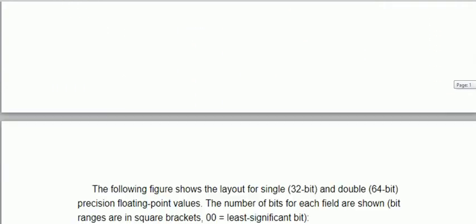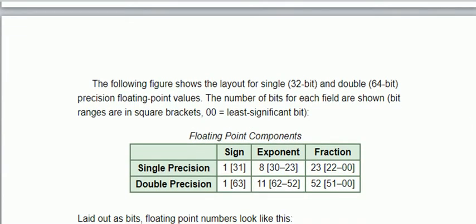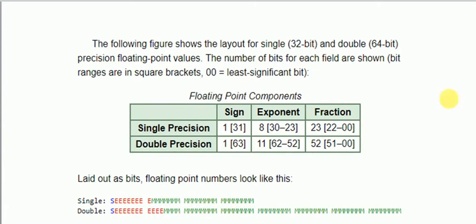Now let us see the format for floating point numbers of single and double precision. Single precision floating point numbers has 1 bit reserved for sign, 8 bit reserved for exponent part and 23 bits reserved for fraction part.